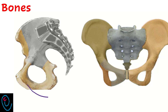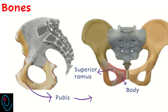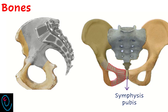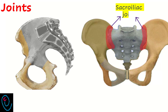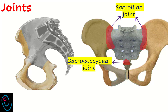The pubis forms the anterior part of the hip bone. It has a body, superior ramus, and inferior ramus. The two pubic bones articulate anteriorly together at the symphysis pubis. The sacroiliac joint is a synovial joint forming articulation between the ilium and the first two sacral vertebrae on either side. The sacrococcygeal joint is a fusion of the sacrum and the coccyx. The symphysis pubis is a cartilaginous joint between the two pubic bones in the midline.